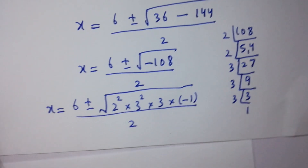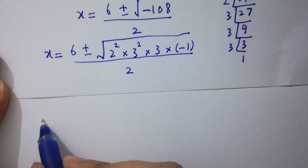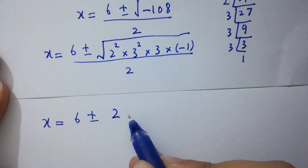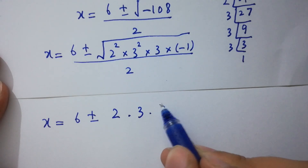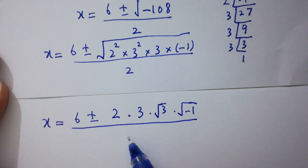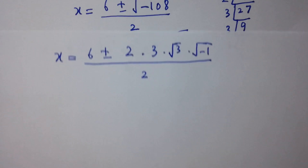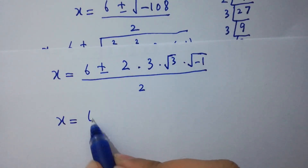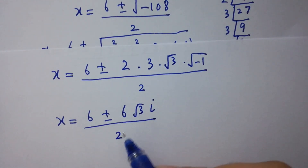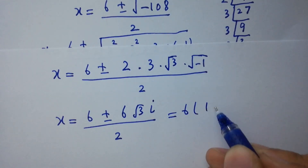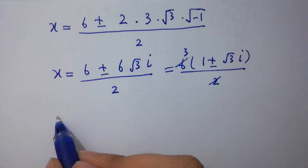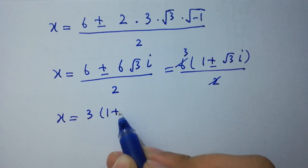Simplifying the square root: the perfect squares come out of the radical. We get 2 times 3 times square root of 3 times square root of minus 1, which is 6 square root of 3 times i, from complex numbers. So x equals 6 plus or minus 6 square root of 3 i, all over 2. Taking 6 as a common factor, we have 6 times (1 plus or minus square root of 3 i), over 2.